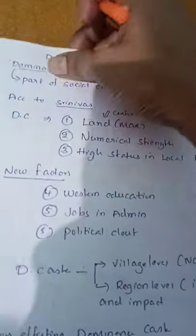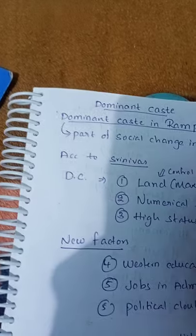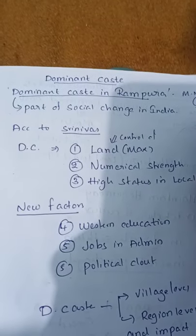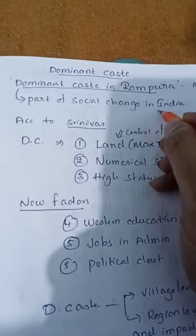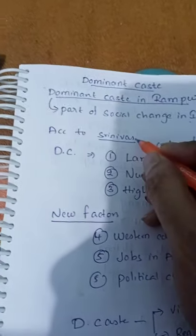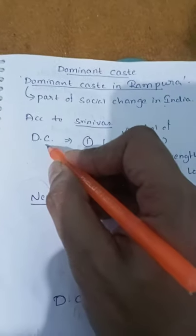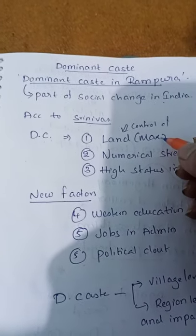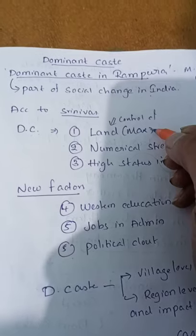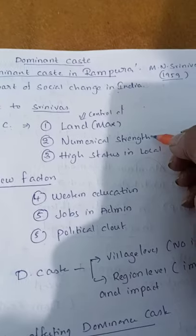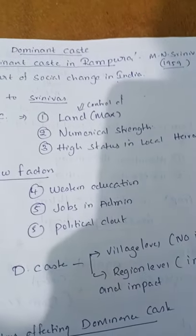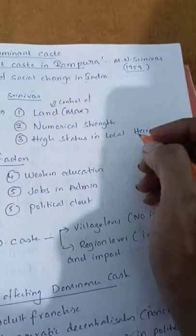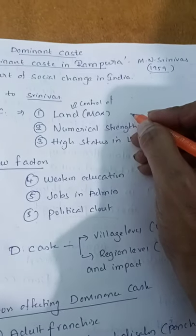The concept of dominant caste was given by M.N. Srinivas in the year 1959 in his work 'Dominant Caste in Rampura,' which is part of 'Social Change in India.' According to Srinivas, for a caste to be a dominant caste, three factors are required: maximum control of land, high numerical strength, and high status in the local hierarchy.